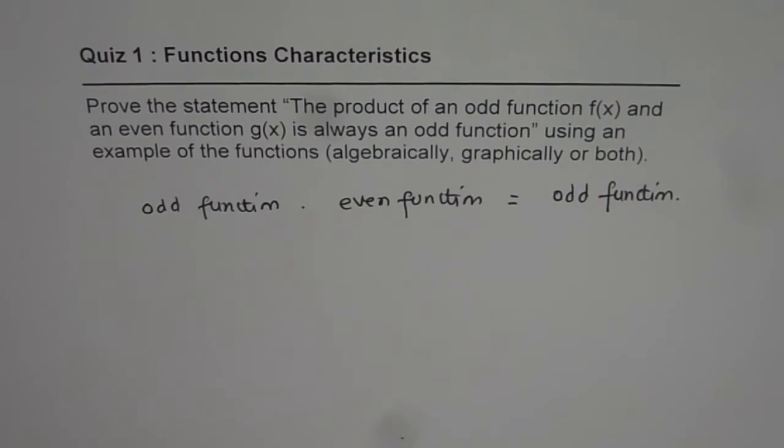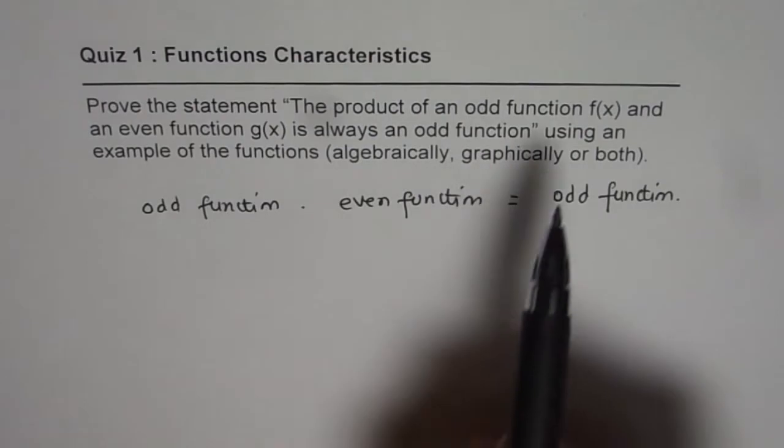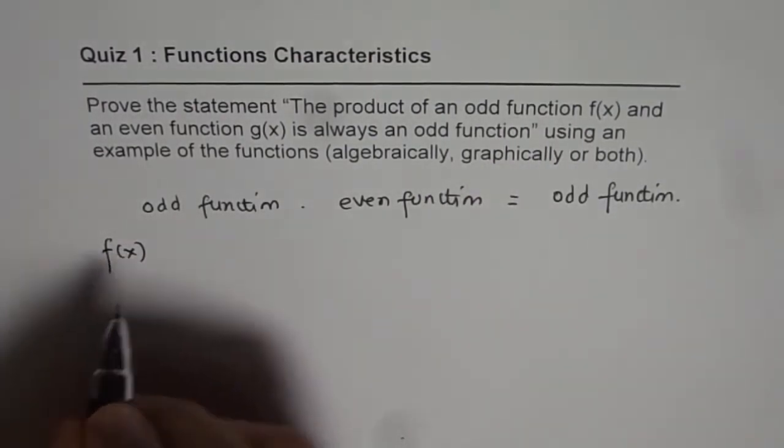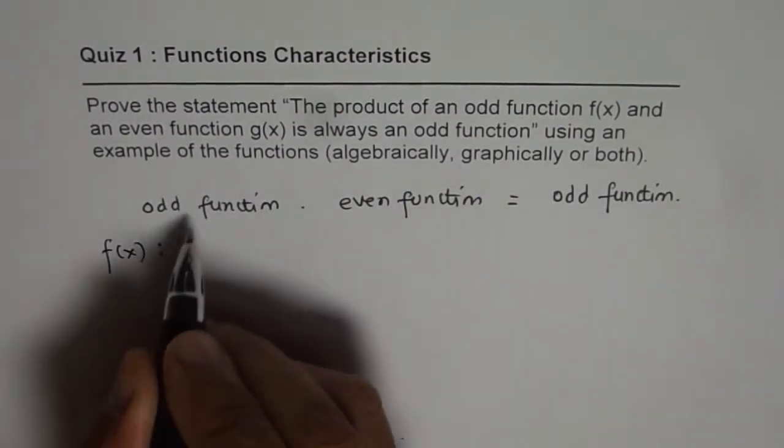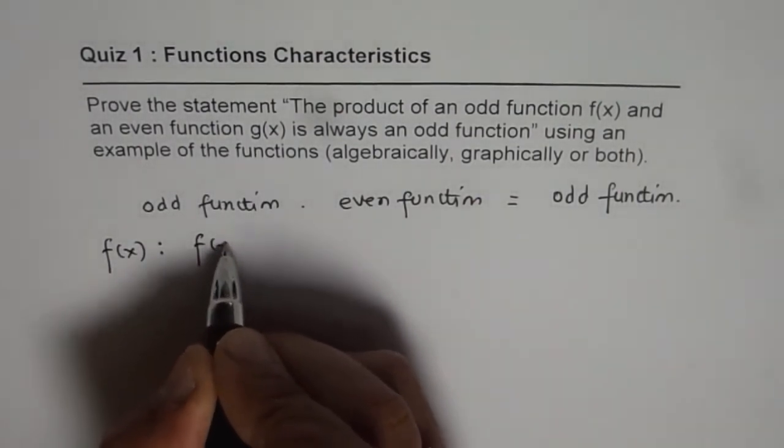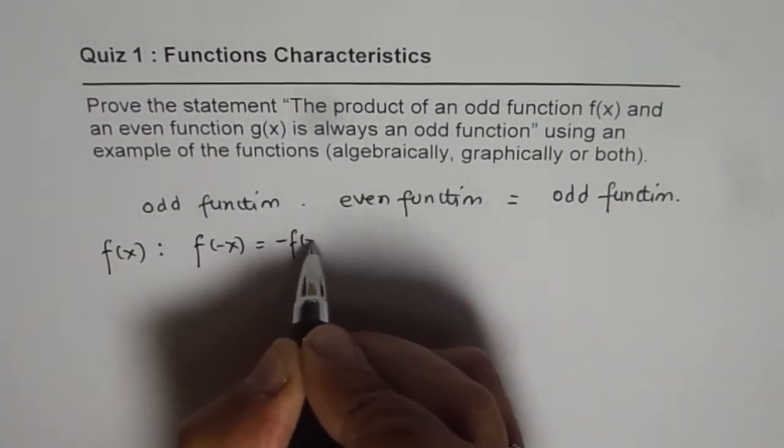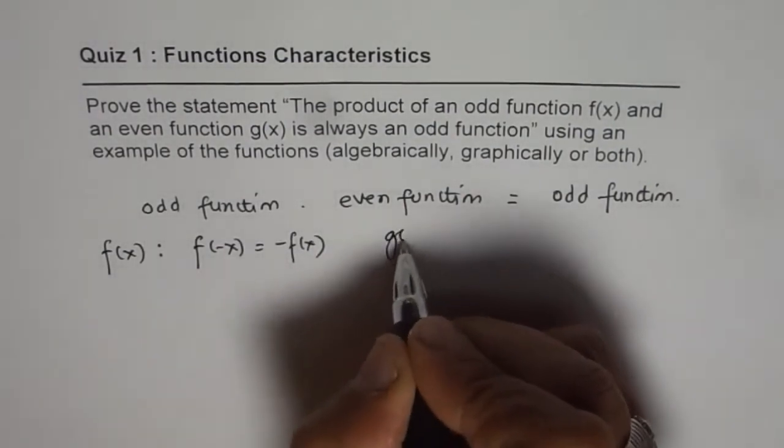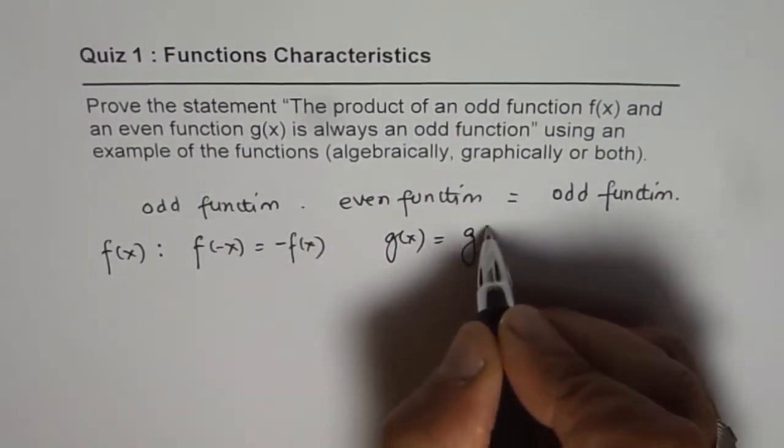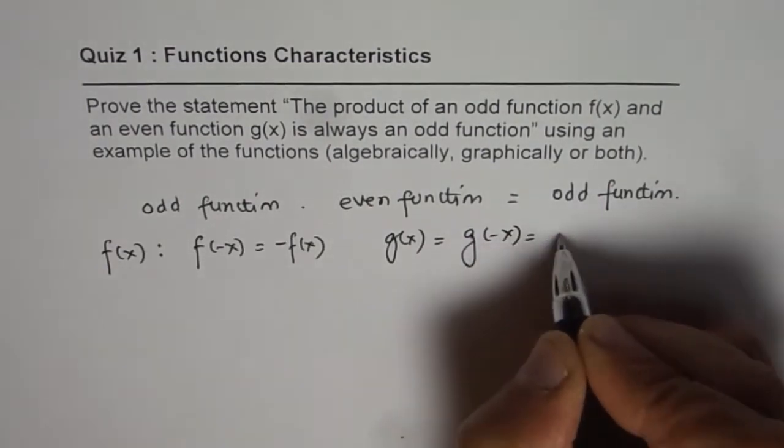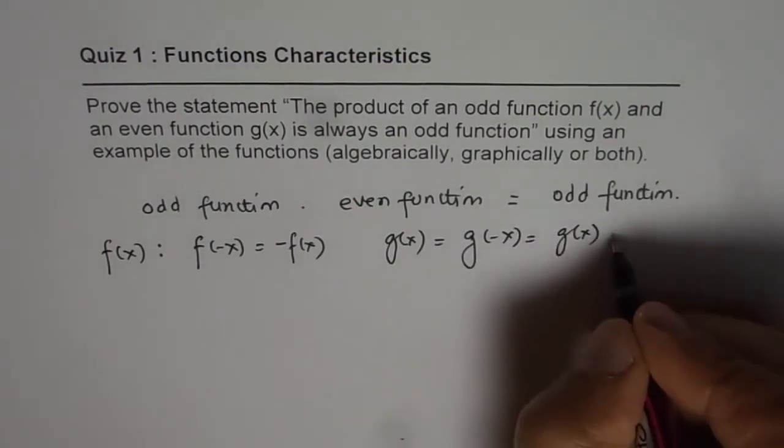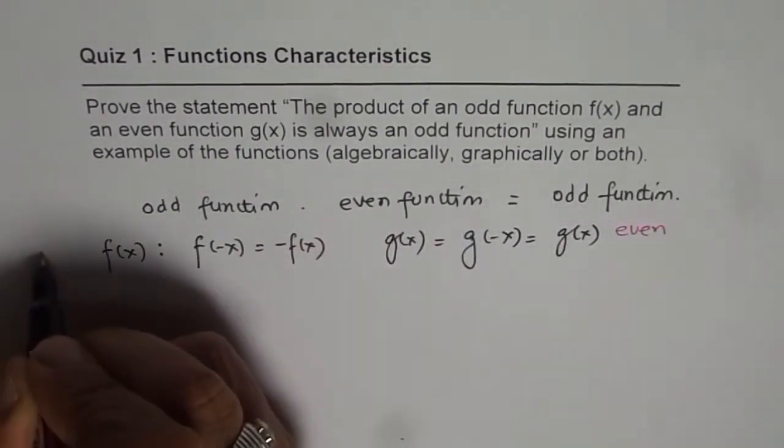We will prove it in a couple of different ways. Let's take an example. Odd function f(x), so we are given f(x) is an odd function. It really means f(-x) equals -f(x). On the other hand, we will take a function g(x) as even function, which really means that g(-x) equals g(x). So that makes it even. So this is even for us, and this one is odd for us.